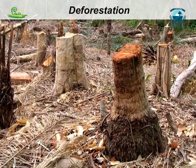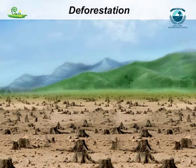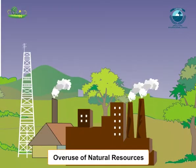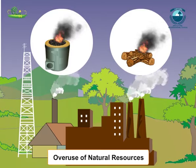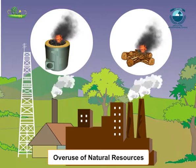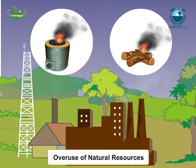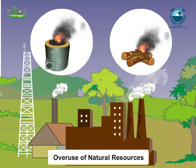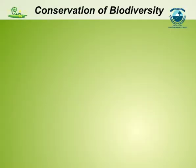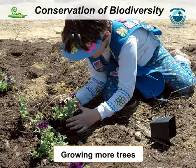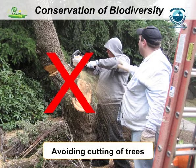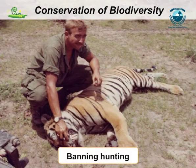Our biodiversity is at threat due to deforestation, excessive chemicals and overuse of natural resources like coal, petrol, wood, etc. Many species have been lost and more are on the verge of being lost. So, we have to conserve our biodiversity by growing more trees, avoiding cutting of trees, banning hunting and reducing the overuse of exhaustible natural resources.